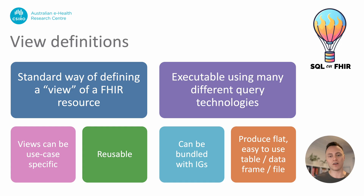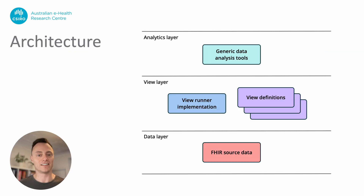Depending on the view runner and the technology used, the output can be a database table, a data frame, a CSV file, or anything that can be used to represent tabular data. The idea is that view definitions exist in an architecture that has three layers: a data layer, a view layer, and an analytics layer.